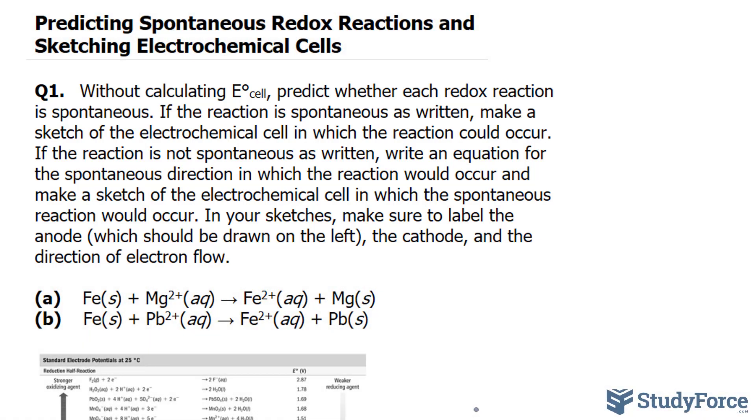In your sketches, make sure to label the anode, which should be drawn on the left, the cathode, and the direction of electron flow.